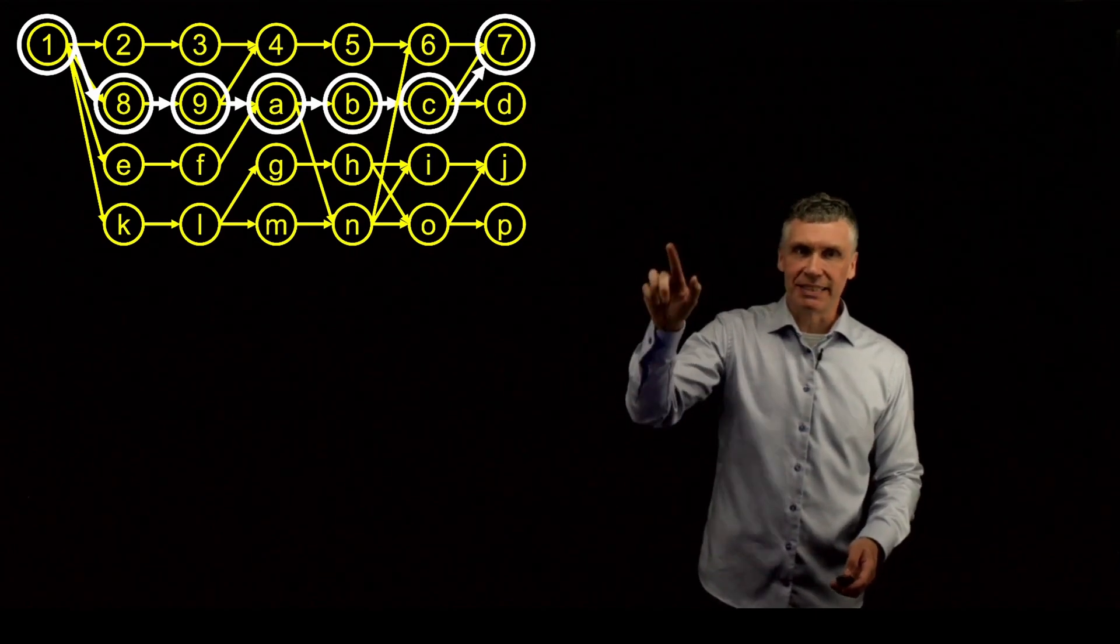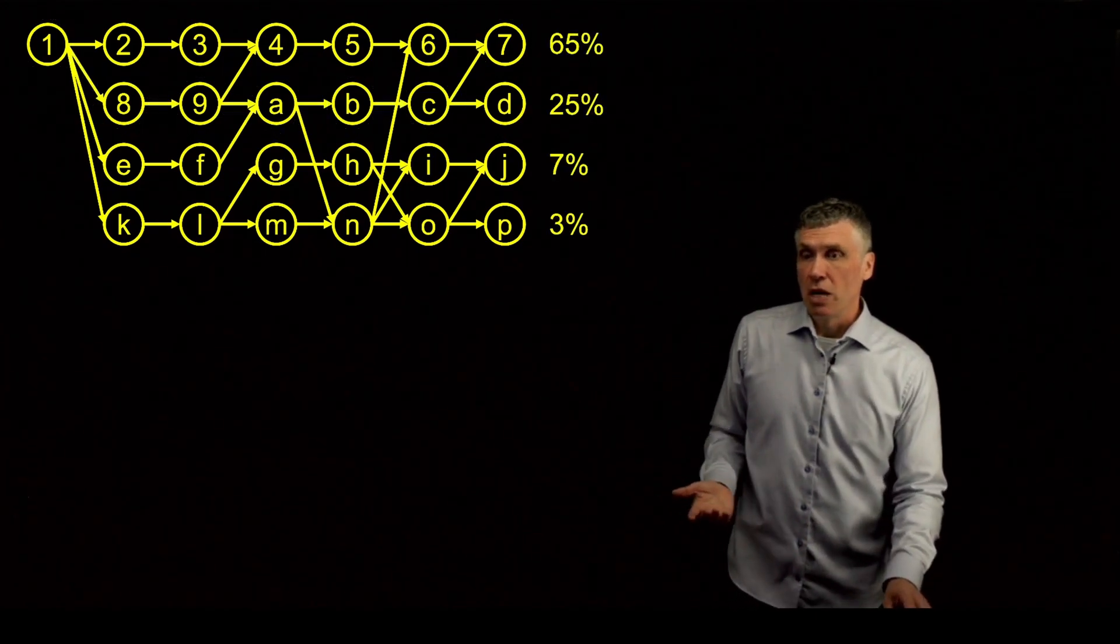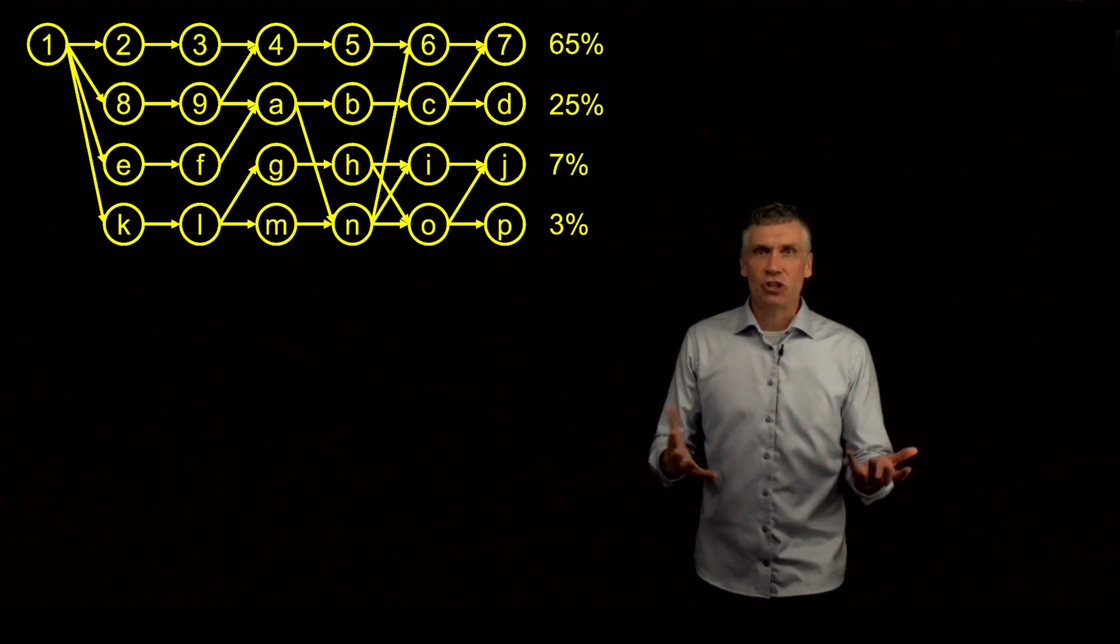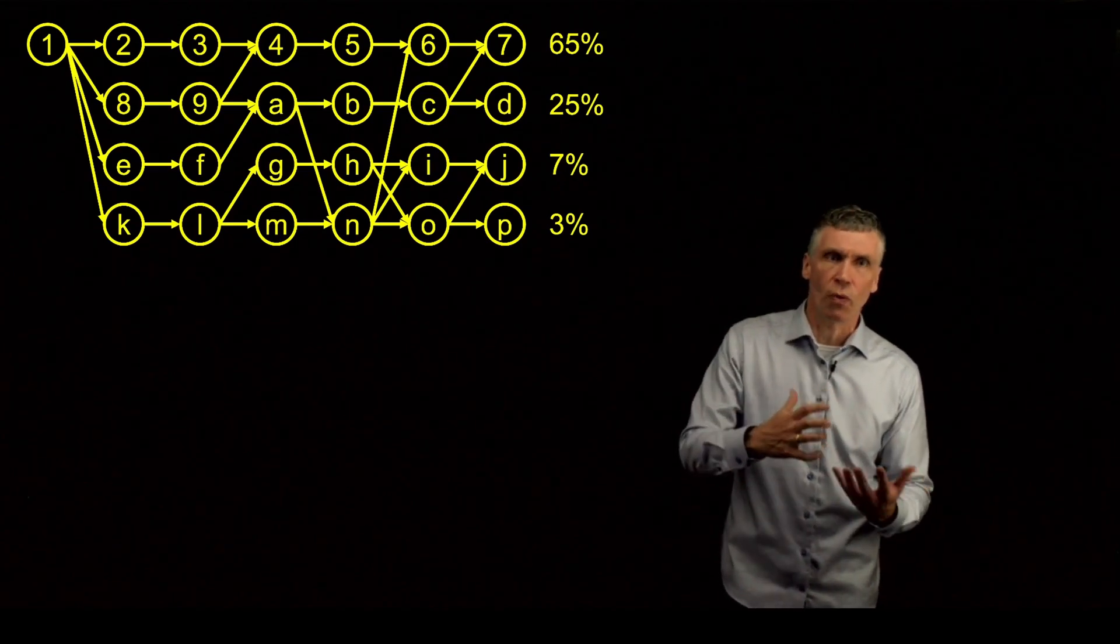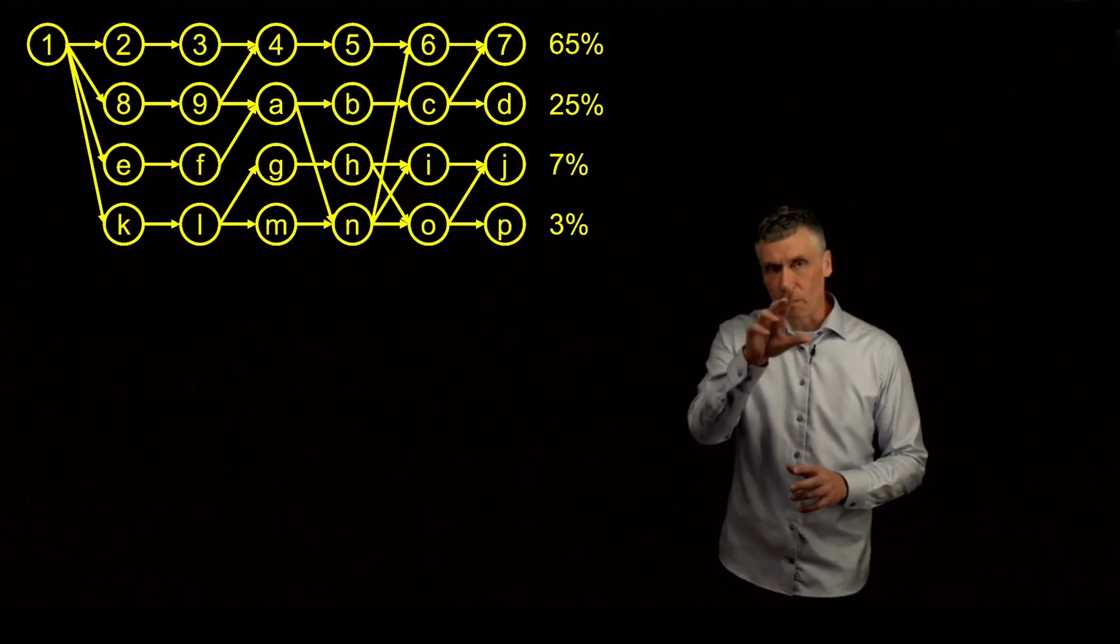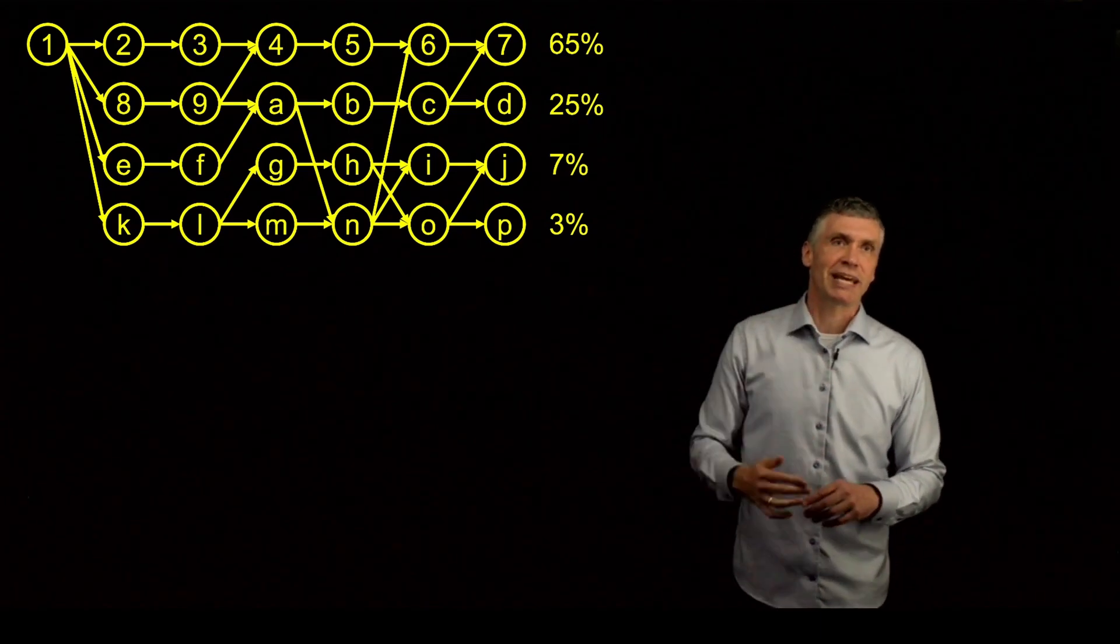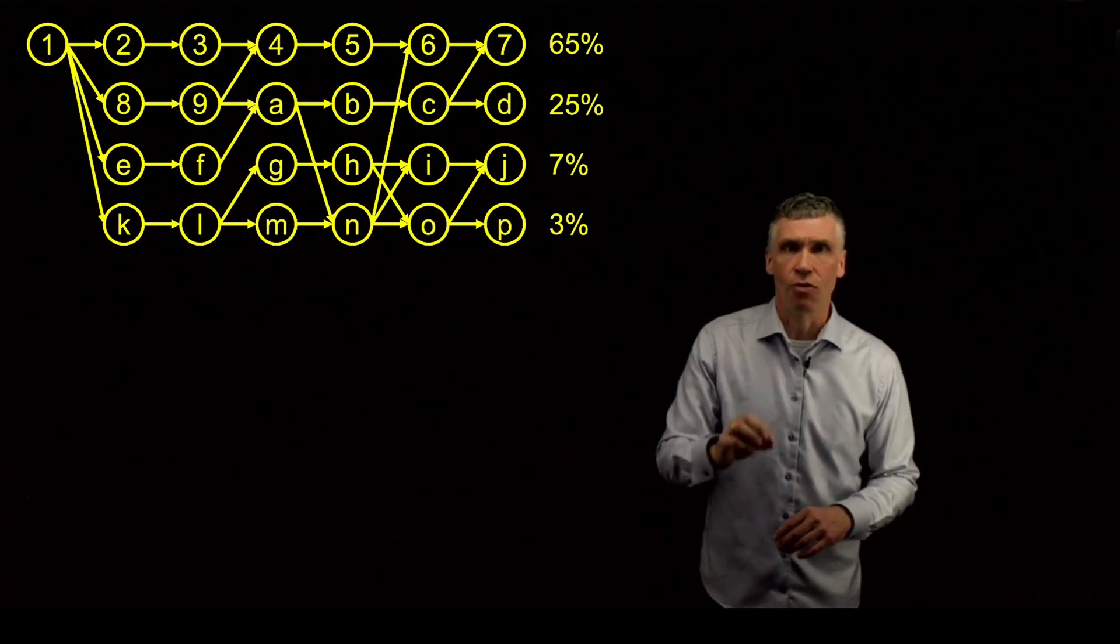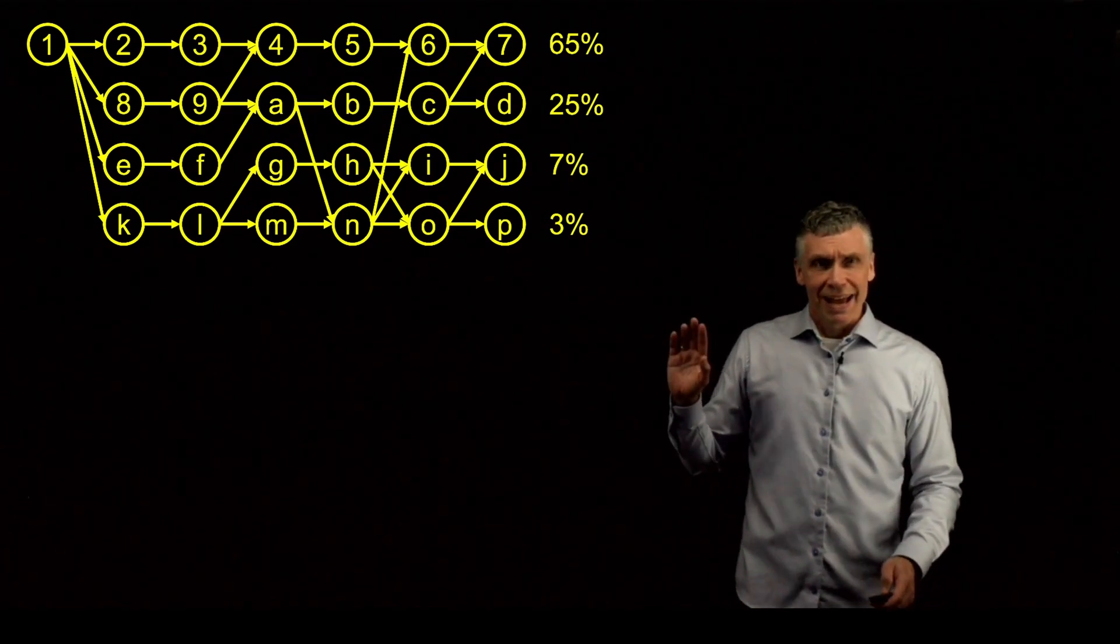I don't want to imply that 7, D, J, and P are all equally likely, because they're not. Cases you teach enough, you get a sense of where things are going and where the group's going to go. I don't mean to imply that they're all equally likely. In this case, 7 is certainly the most likely outcome, but it is not the only outcome.